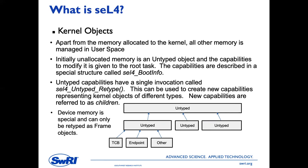The untyped object is important for how objects are created in SEL4. When you make use of a capability, you make a function call called an invocation. An important invocation for the untyped object is called SEL4 untyped retype. This can be used to create new capabilities representing kernel objects of different types — these new capabilities are referred to as children. There's also a Boolean flag associated with untyped: it can be marked as device memory, which is special in that it can't be converted into other kernel object types. It can be retyped as a frame object, which can be used to access registers and so forth.